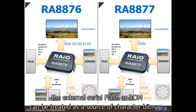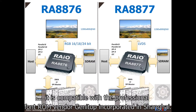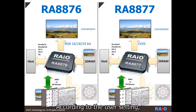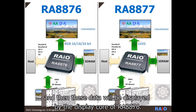Besides, the external serial flash or ROM can be treated as a source of character bitmaps. For supporting the most useful characters, it is compatible with the professional font ROM vendor Genetop Inc. in Shanghai. According to the user settings, if the display data has already been stored into the SDRAM, this data will be displayed by the display core of RA8876.